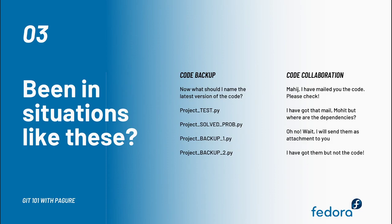Let us now take two scenarios into consideration. In the first scenario, Ajay is expected to turn in a code snippet with the features he was assigned — it is a big code. There are a lot of changes that need to be done, but with every modification Ajay makes, there are features getting fixed but also features getting broken. So he backs up the code with names like project-test.py and project-backup.py, and keeps on renaming them when needed.